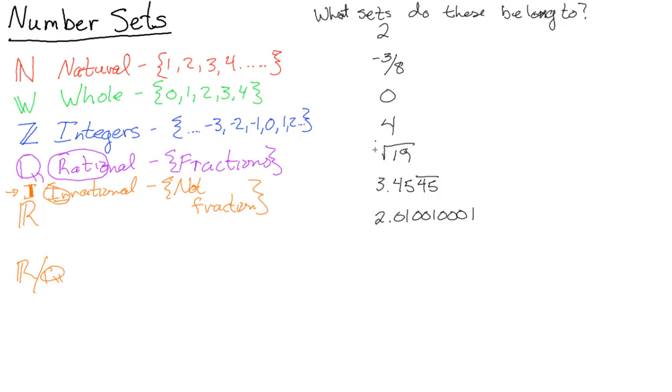Okay, I hope you had a chance to work through those. Let's see what we get. The number 2—you'll notice it's right up here in the natural numbers, which means it is also a whole number because the whole numbers include all the natural numbers. It is an integer because the integers include all the whole and natural numbers, which means it must be a rational number as well. Rationals include all of them.